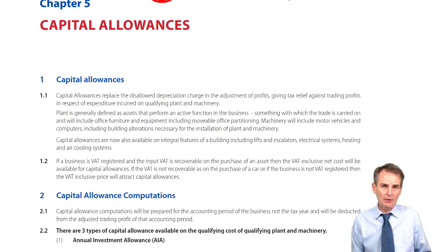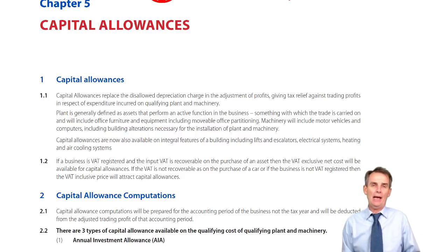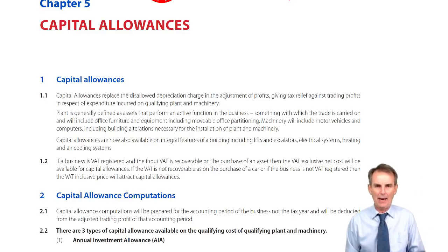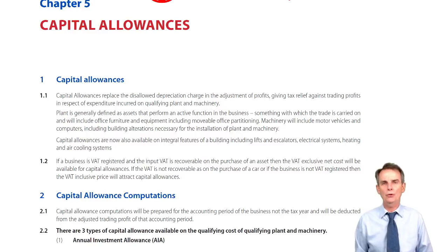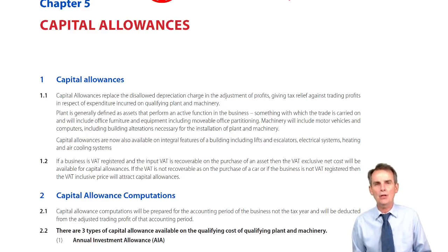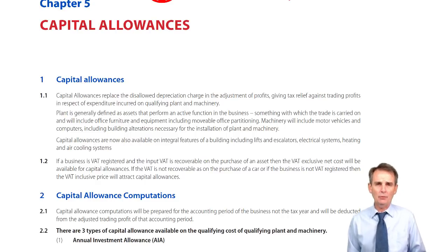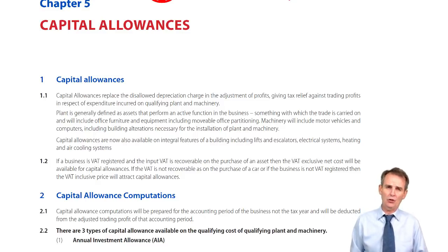In our previous chapter, chapter 4, what we saw was that in terms of the adjustment of profits, we'd have to add back non-allowable expenses. Number one in that list of add-backs, and probably one you'll remember until your dying day, is depreciation. If we see depreciation debited in our statement of profit or loss — though perfectly acceptable for accounting purposes — it's not acceptable for taxation purposes, so we add it back.